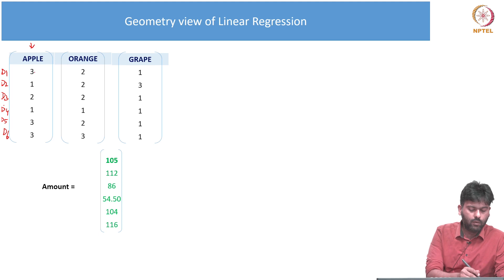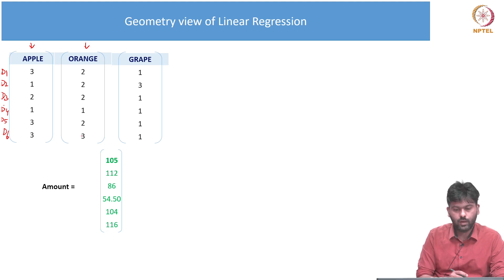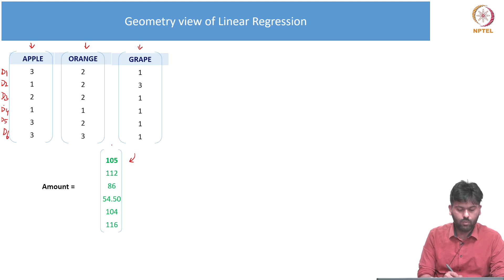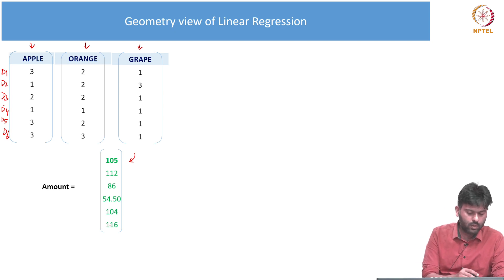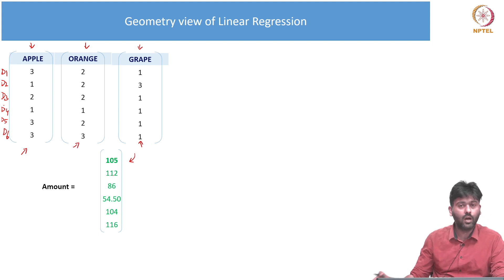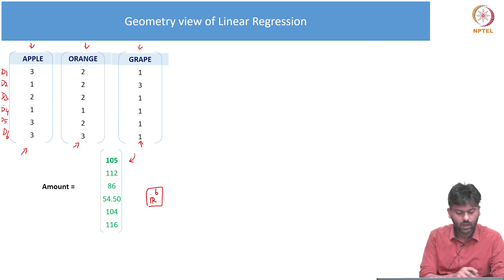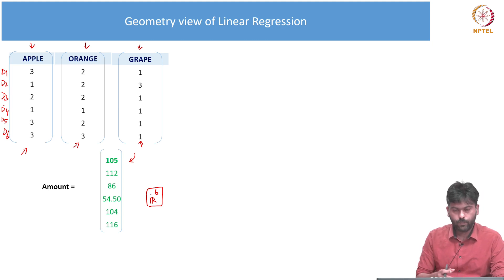One day, apple is one vector. One day, orange is one vector. One day, grape is one vector. One day, amount is one vector. This is a data set. If you put data points, you can put a vector on it. So this is one vector, this is one vector, this is one vector — four vectors. One vector is a six-dimensional vector.